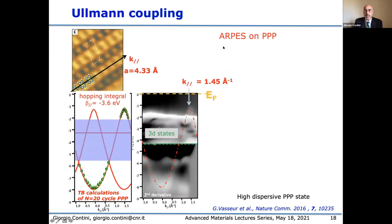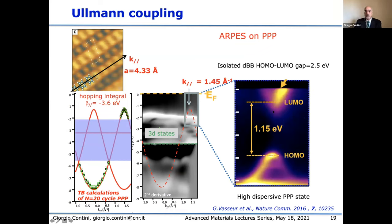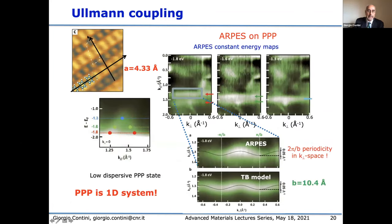We make angle-resolved photoelectron spectroscopy on this PPP polymer, measuring along the direction of the polymers. We obtain highly dispersive states attributed to PPP, in good agreement with tight-binding calculations, and by increasing the resolution we measure a gap of 1.15 eV, which is smaller than expected for isolated DBB molecules, in agreement with previous results. Measuring along the direction normal to the polymer direction, we observe low dispersion of the electronic states, confirming that our polymer is truly a one-dimensional system where electrons are confined along the polymer.